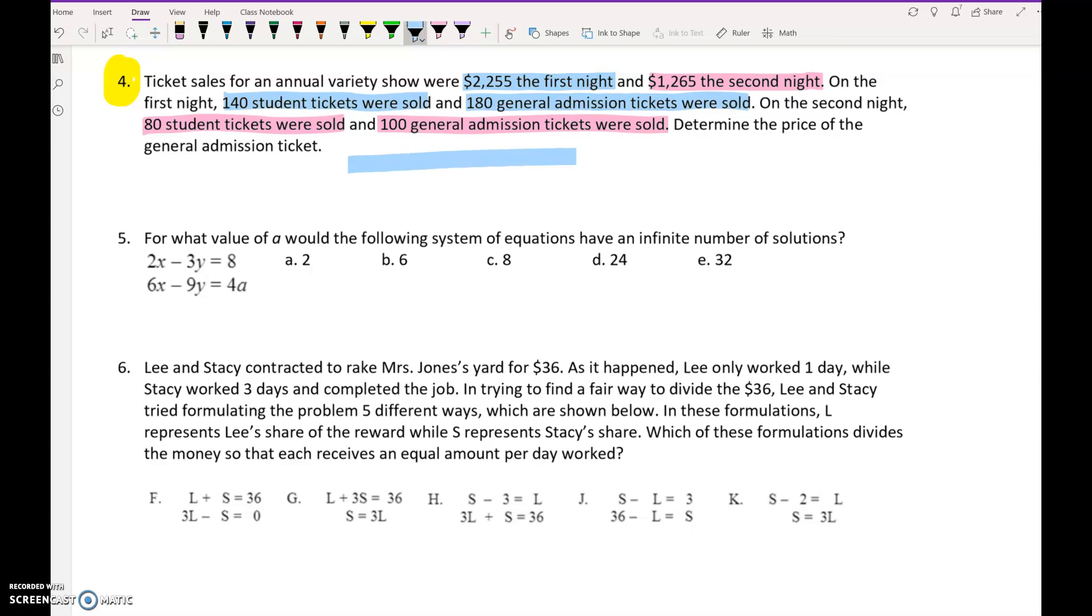So one of our equations is going to be all about the first night. The other equation is going to be all about the second night. So first night, 140 times the price of the tickets. If I sell 140 tickets at $4 each, 140 times 4 would tell you how much money you collected in student tickets. So 140 times X is how much money we collected for student tickets. 180 times Y is how much money we collected from the general admission tickets, and that totaled $2,255. So number times price plus number times price equals total price.